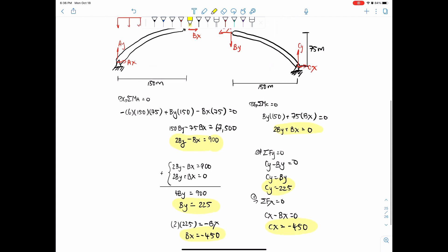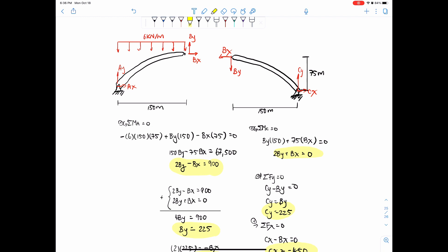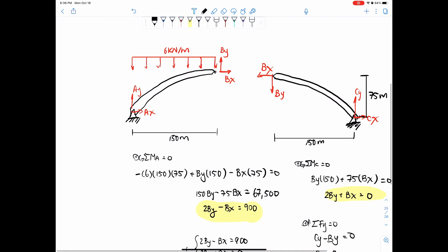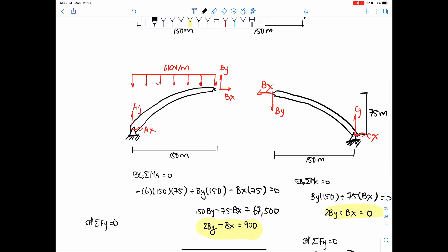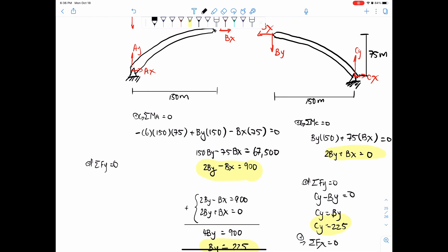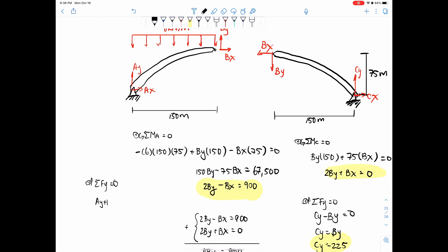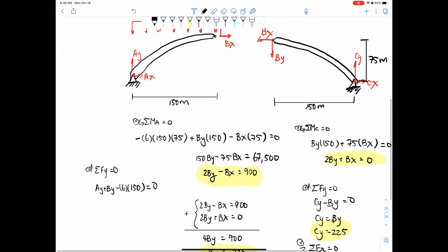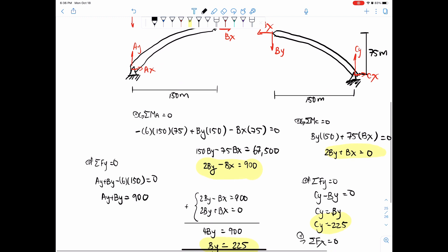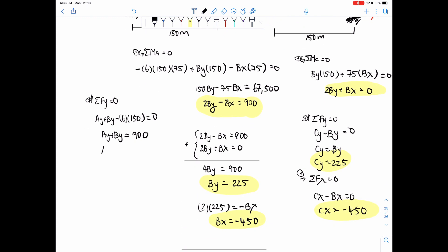So once we have that, it is simply just go to the other side. So we are just going to do the sum of forces again in the Y direction, this time for segment AB. So we are going to do AY plus BY minus 6 times 150, so that's from the distributed load, equals 0. So AY plus BY equals 6 times 150 is 900. And then BY, what was BY again? BY equals 225, so then 900 minus 225, which equals 675 kilonewtons going upwards.